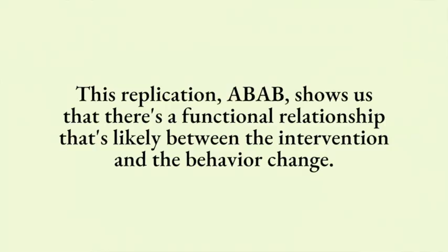After we see some stability in the data after implementing intervention, we then withdraw the intervention. At this point, we would expect the data to go back to baseline levels because we're no longer presenting that independent variable responsible for behavior change. Then once we see steady states of responding in baseline again, we drop another phase line on our graph and start implementing intervention again. Ideally, behavior would go back to the same level as in the prior intervention phase. This replication is what shows us that there's a functional relationship likely between the intervention and the behavior change.